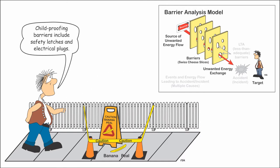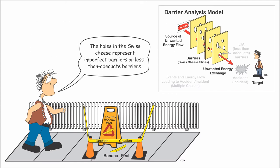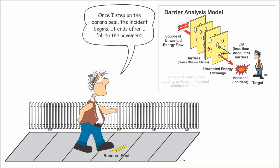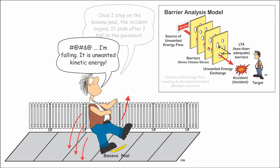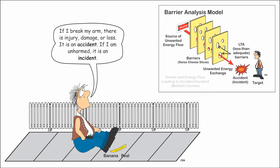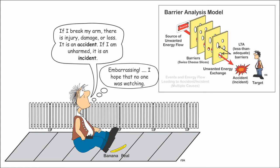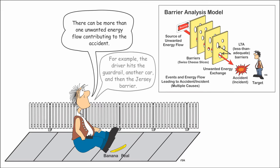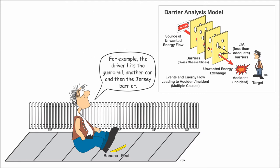Childproofing the home might include electrical outlet safety plugs and cabinet safety latches. The barriers are less-than-adequate (LTA), meaning that they are not perfect in preventing the potential unwanted energy flow. If the energy transfers to the target, an accident occurs with injury, damage, or loss — the car deforms, the driver is injured, the child is harmed. Last, there may be multiple causes: more than one source of potential energy flows, or the source can generate more than one potential unwanted energy flow.